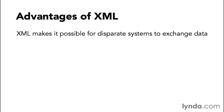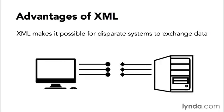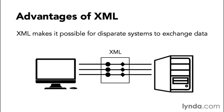XML also makes it possible for disparate systems to exchange data, even systems that were never designed to talk to each other in the first place. Let's suppose you have two computers and you want to share information between them. One of those computers is modern and speaks a certain language, and the other is a little bit older and only knows a certain dialect. XML can be used to help solve this problem by creating a bridge between these two computer systems so they can exchange data even though they're not aware of each other.